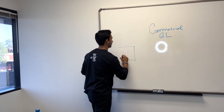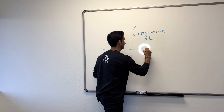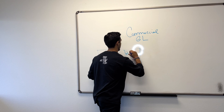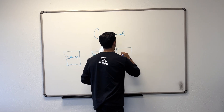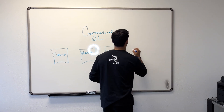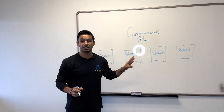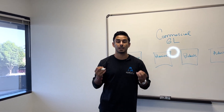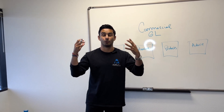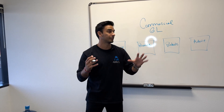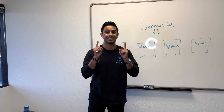There are four buckets. Bucket number one, we're going to call it service. Bucket number two is going to be premise. Bucket number three, we're going to name it products. And lastly, bucket number four — advice. As mentioned, these four buckets are the main areas for potential claims — basically a lawsuit for your business. If you have a commercial business, these are the four potential buckets of claim scenarios that could happen for liability.